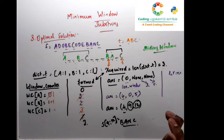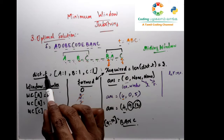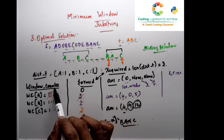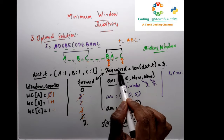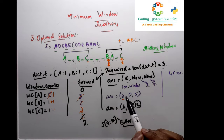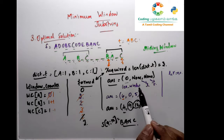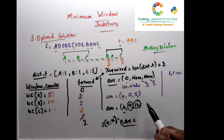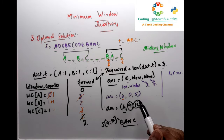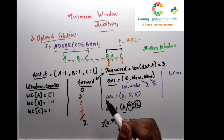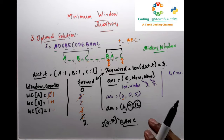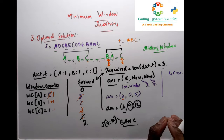To summarize the concept: we create dict_t from T, then get the length of unique characters as 'required'. We use a sliding window with 'window_counter' and 'formed' to track matched characters. The 'ans' tuple stores the best window. The problem is hard not because the logic is hard, but because there are many nuances in the code implementation.